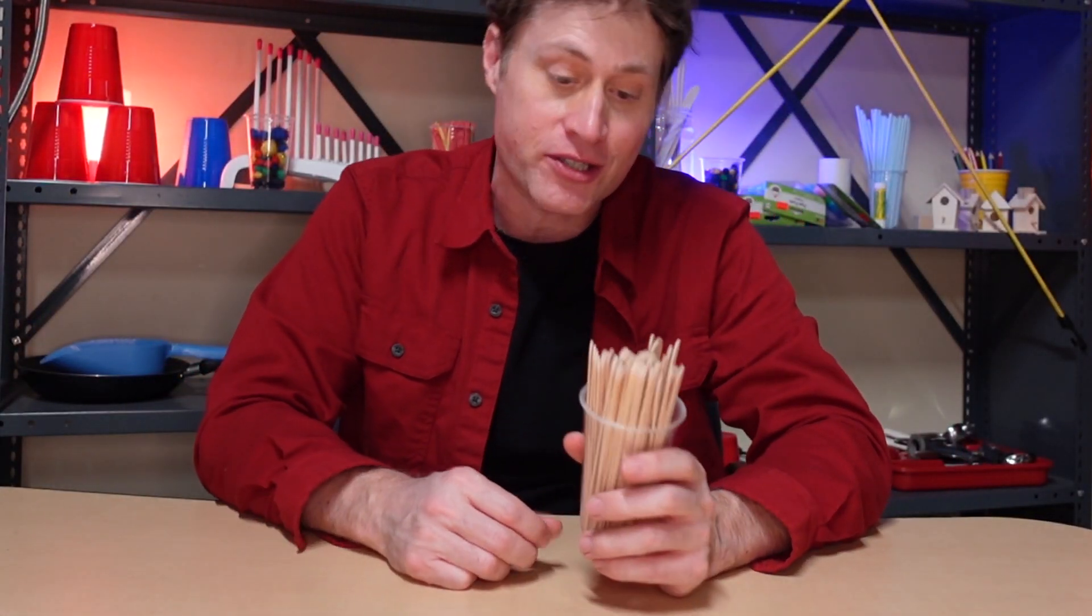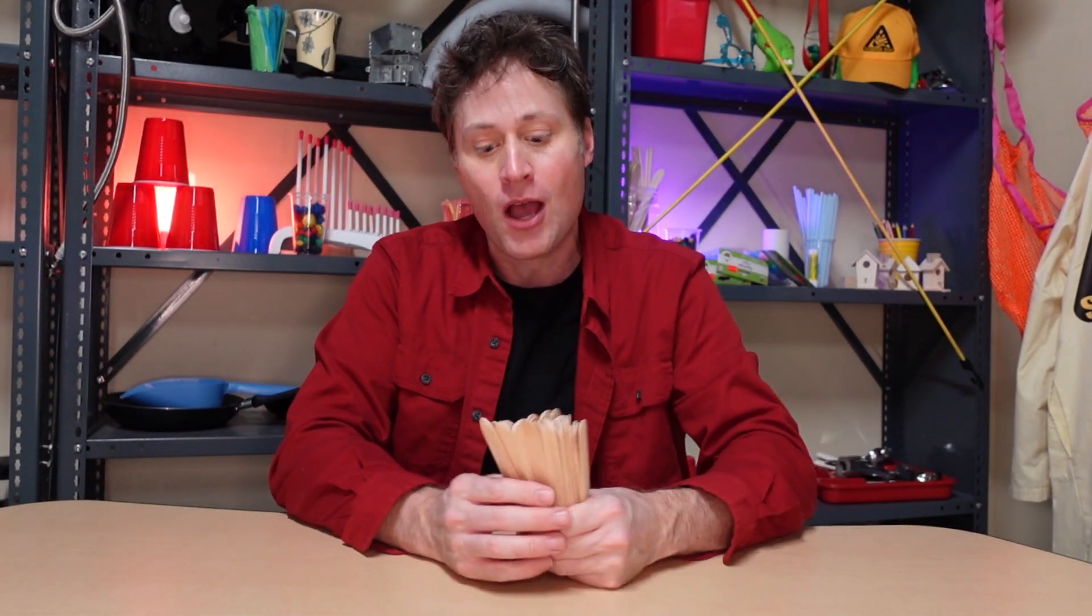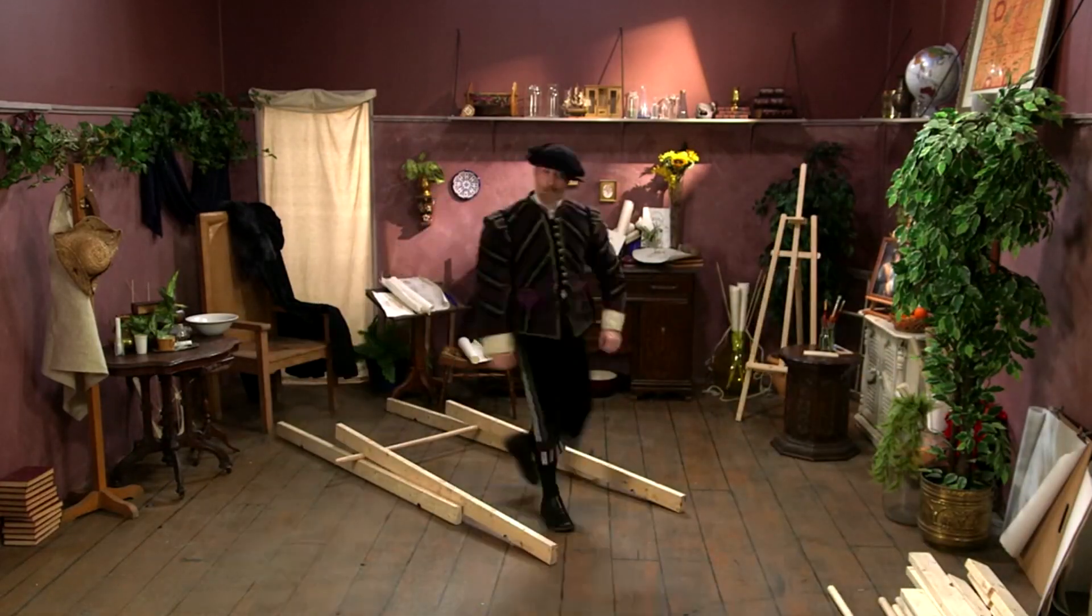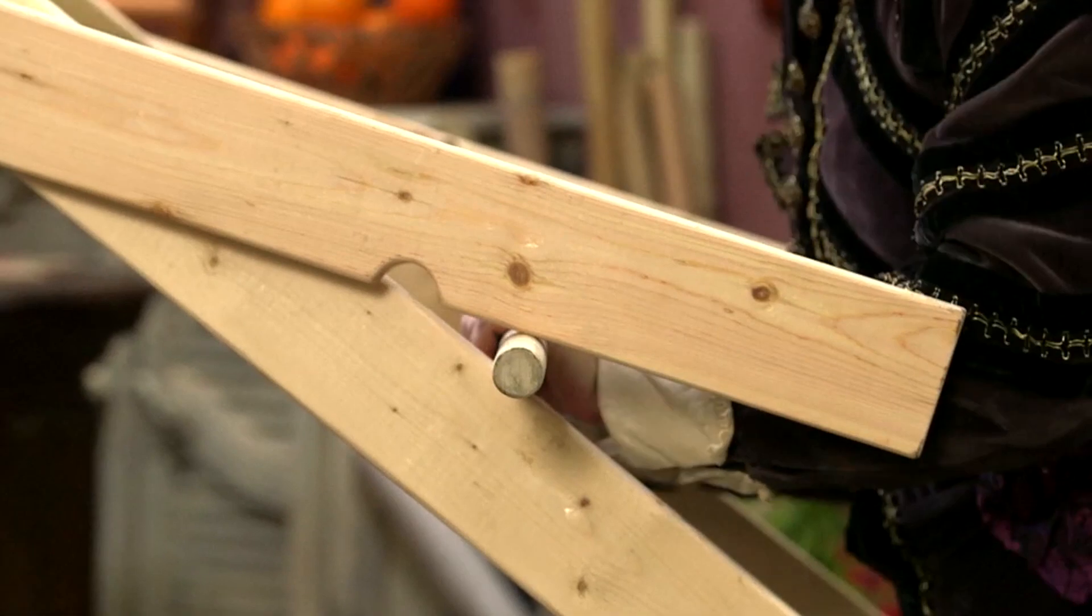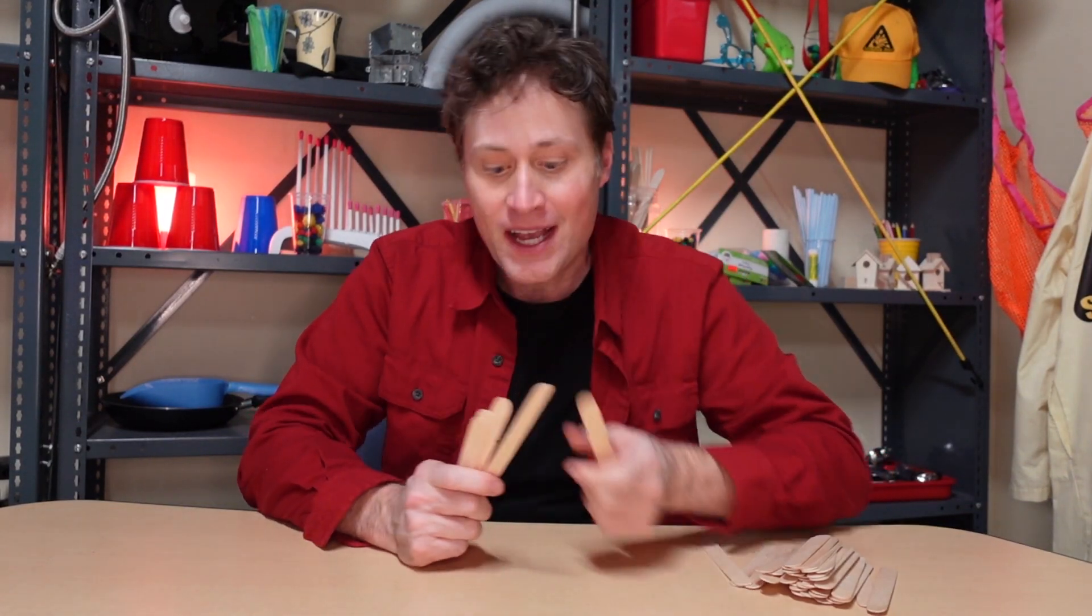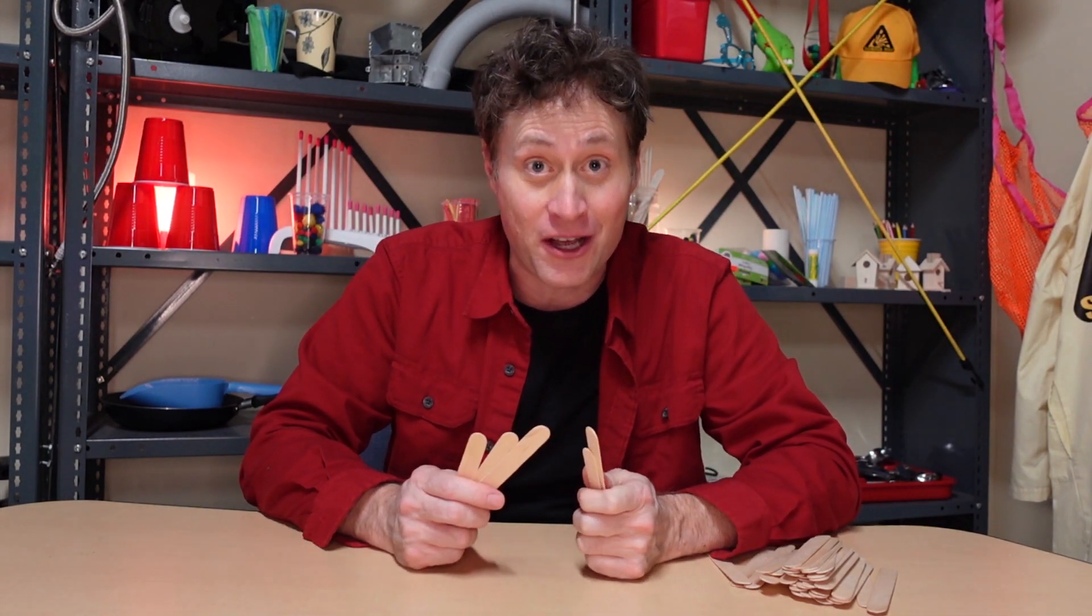All you need is popsicle sticks. In fact, you don't even need this plastic cup. We're just going to use popsicle sticks. Now when you build it, and if you've seen it on ScienceMax when we built it at a large scale, they had little grooves in the sticks and that makes it a lot easier. When you do it with popsicle sticks, it's actually quite difficult. It's like building a card house.